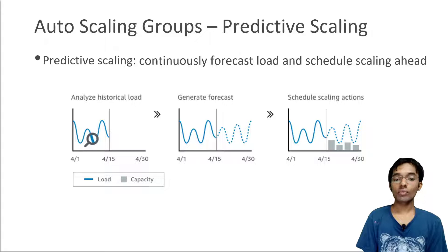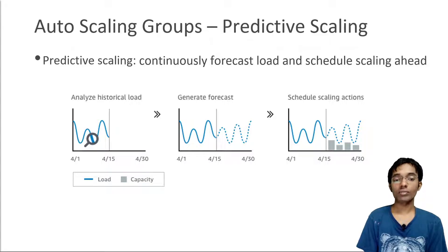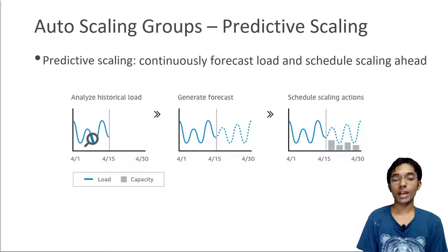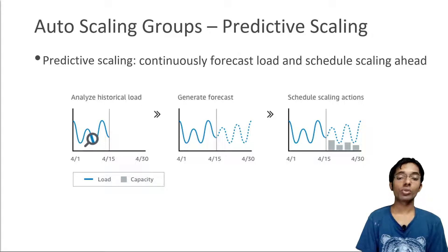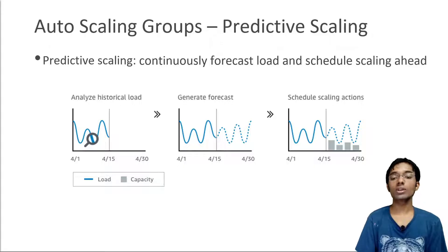On the opposite side, you have predictive scaling. This is used to continuously forecast load and then schedule scaling ahead. AWS will analyze your historical load, generate a forecast based on that load, and then automatically set up scaling actions in advance to predict the right number of instances needed to sustain the load. It's especially good if you have patterns in your load from week to week or from day to day.